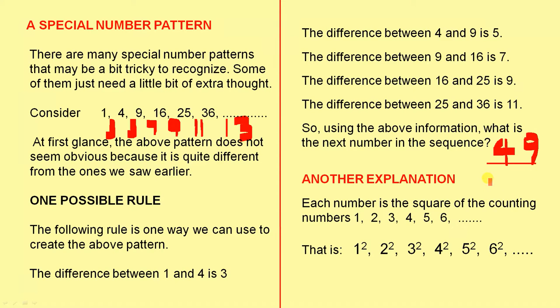Now here's another explanation how we can create this pattern. Each number is the square of the counting numbers 1, 2, 3, 4, 5, 6. In other words, the first term is 1 squared, which is 1. The next term is 2 squared, which is 4. 3 squared is 9, 4 squared is 16, 5 squared is 25, 6 squared is 36, and 7 squared is 49.